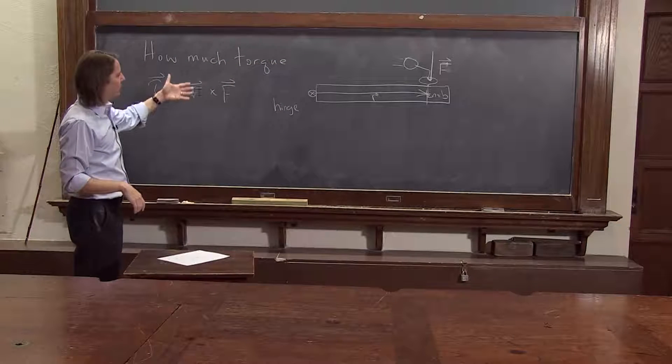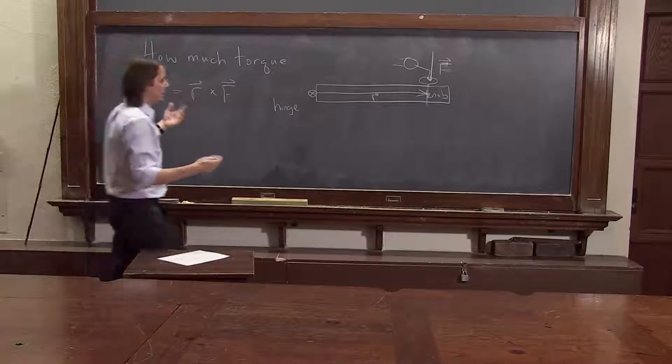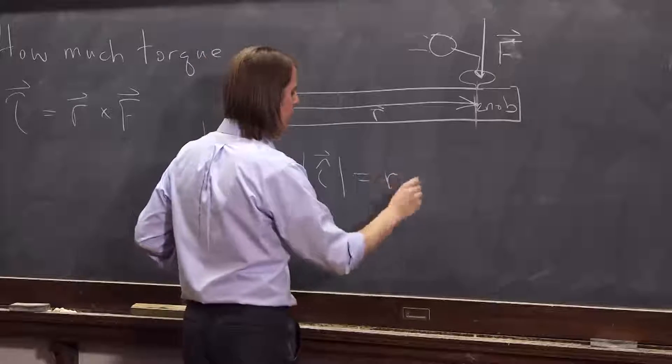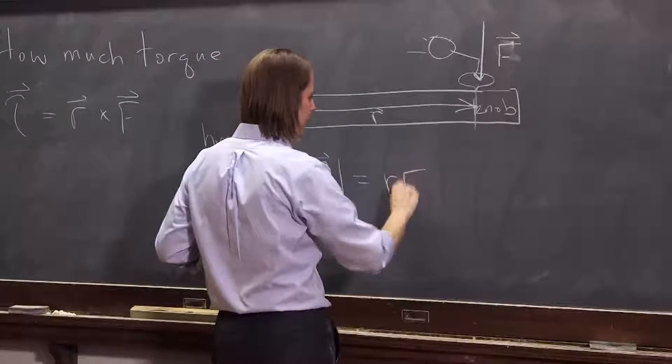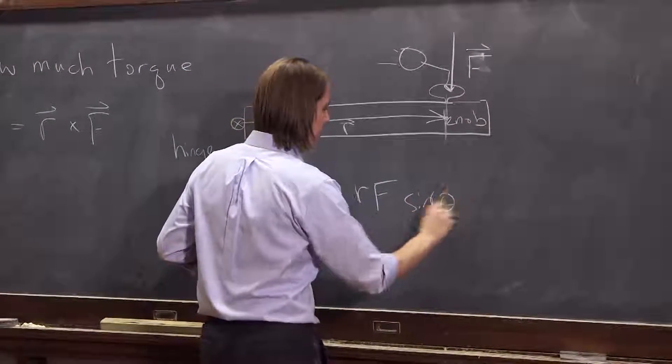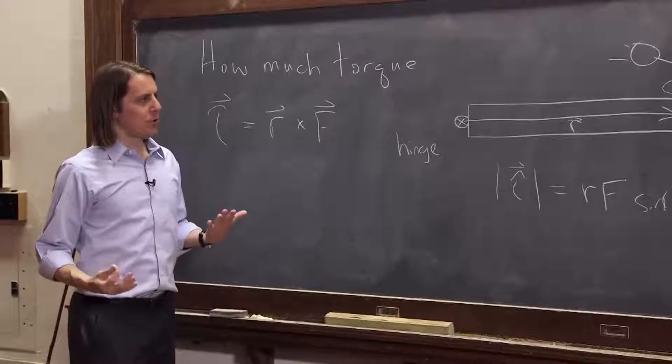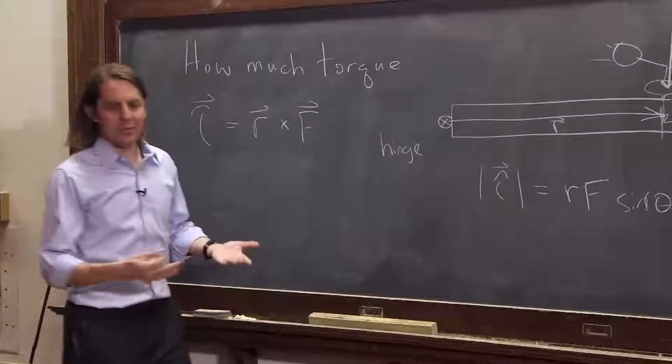So tau is R cross F. The magnitude, we want to get the magnitude of tau. It's just R, that distance, times the force F, times sine of theta between them. So if you want to apply the maximum torque, you push at 90 degrees. And that's intuitive, right?